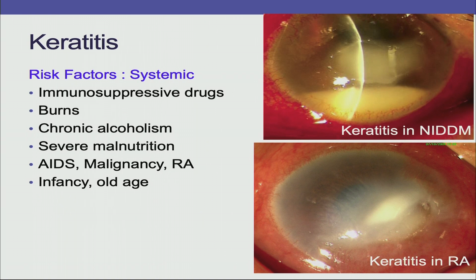Systemic risk factors include use of immunosuppressive drugs, burns, chronic alcoholism, severe malnutrition, AIDS, malignancy, rheumatoid arthritis, and extremes of age — meaning infancy and old age.